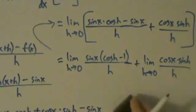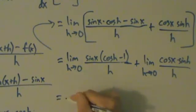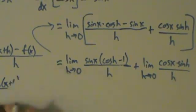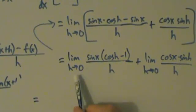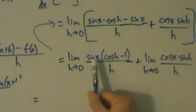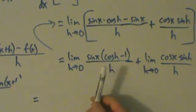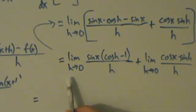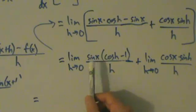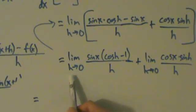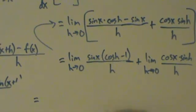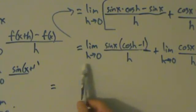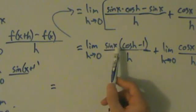Now notice: this is a limit as h goes to 0, and sine of x has no h in it. As far as the limit is concerned, sine of x is just a constant because the limit depends on h, not x. So if it just has x in it, we pull it out and treat it like a constant.